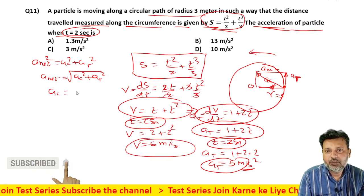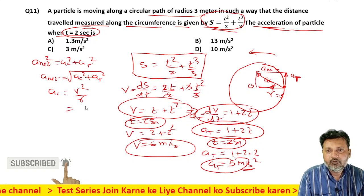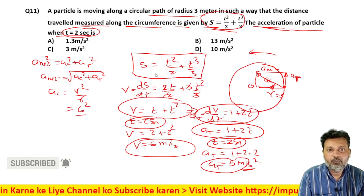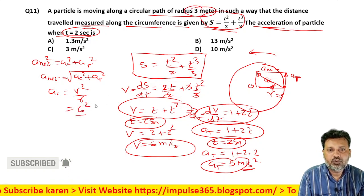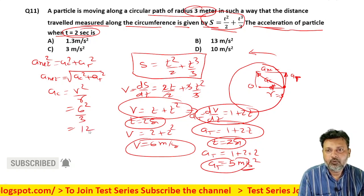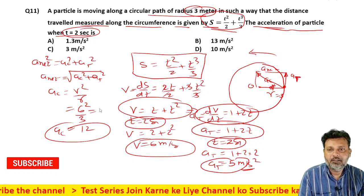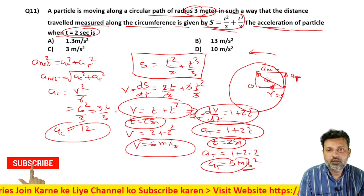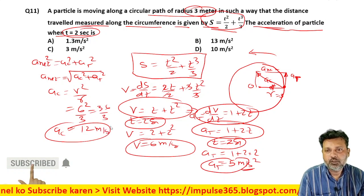Now what will be the value of centripetal acceleration? v square by r. The value of v is six, six squared upon r. What is the value of r given in the question? Three meters. So 36 by 3, how much will it be? 12. Easy. 12 meter per second square.